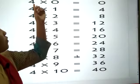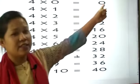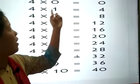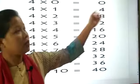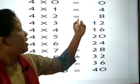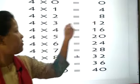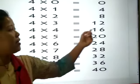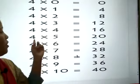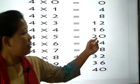Again repeat with me. 4 0s are 0, 4 1s are 4, 4 2s are 8, 4 3s are 12, 4 4s are 16, 4 5s are 20.